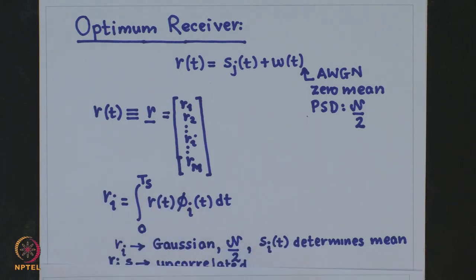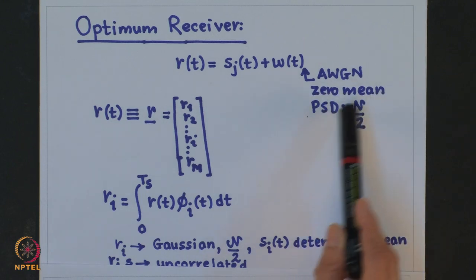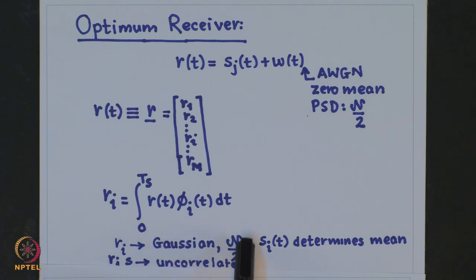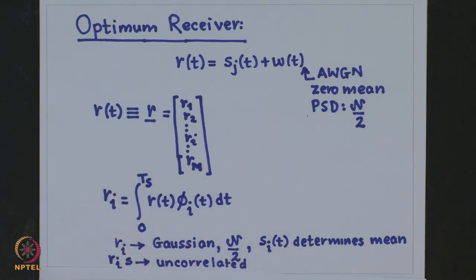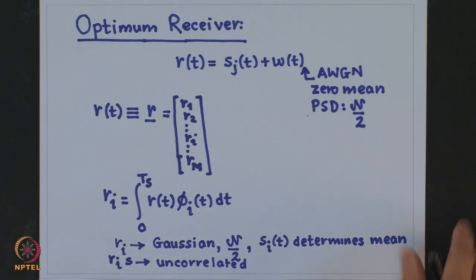Each R_i will be Gaussian, since we assumed the noise to be additive white Gaussian noise with zero mean and power spectral density N₀/2. These R_i's will be Gaussian with variance N₀/2, and the mean of R_i is determined by S_i(t) — the signal being transmitted. The R_i's are uncorrelated, and being Gaussian they are also independent. We obtain the message vector for each message signal by projecting onto the orthonormal basis signals.